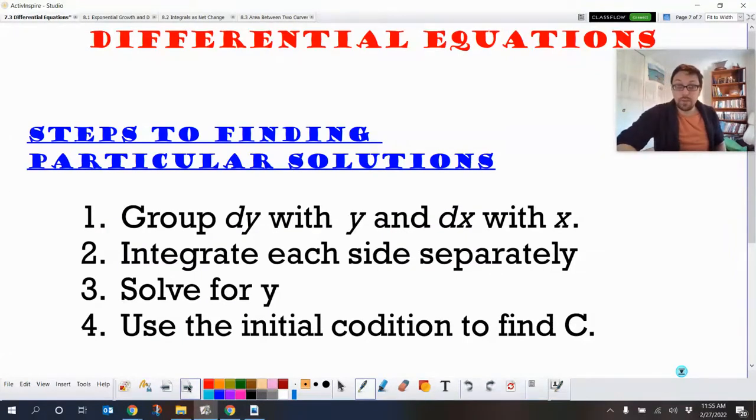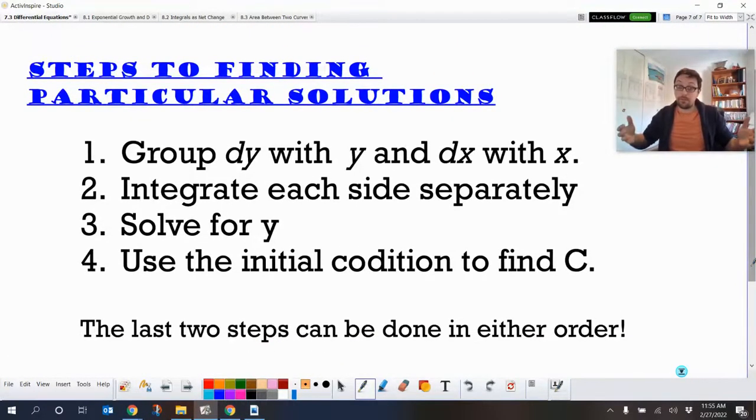And that's it for differential equations. Make sure you are grouping dy with y and dx with x. And then integrate each side separately. Steps three and four can be done in either order. So if you want to solve for one of your variables first, that's fine. If you want to use your initial condition first, that's fine. You just need to make sure if you're given an initial condition that you do that part. Oftentimes, you will always solve for y. And I think that's it. Thanks for watching. Goodbye.